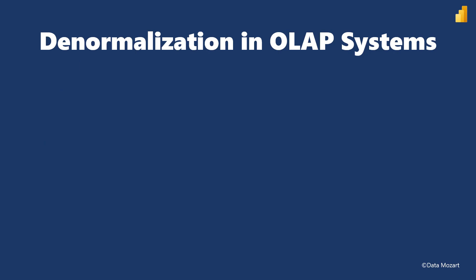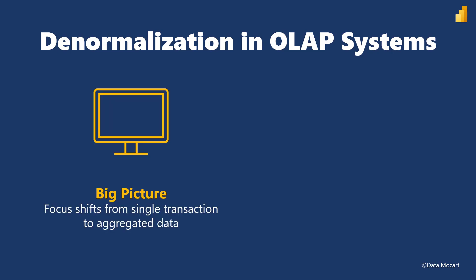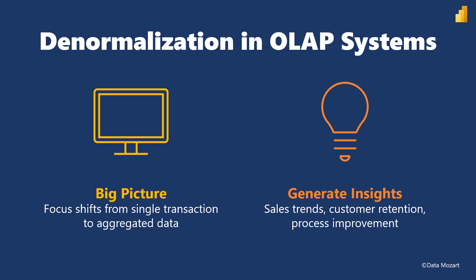On the flip side, denormalization represents the opposite concept. In Online Analytical Processing Systems, the emphasis is on the speed of data reading. These systems are designed to enable business users to understand the big picture of the data stored in the database. That means the focus shifts from a single transaction to aggregated data. You can extract information from a large database and perform analyses to support decision-making. The main purpose is to generate insights from transactional data — such as understanding sales trends, customer retention and satisfaction, or finding potential bottlenecks and improving business processes.